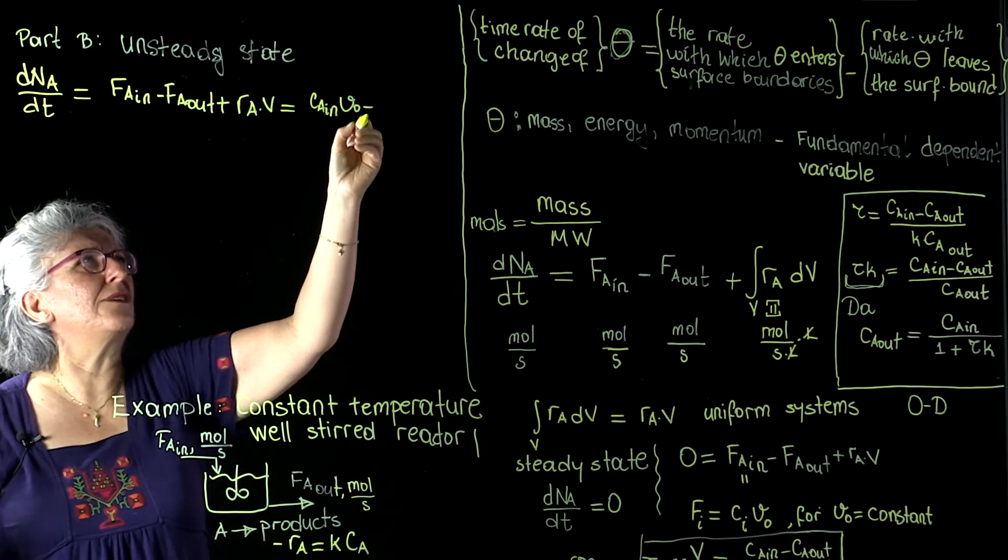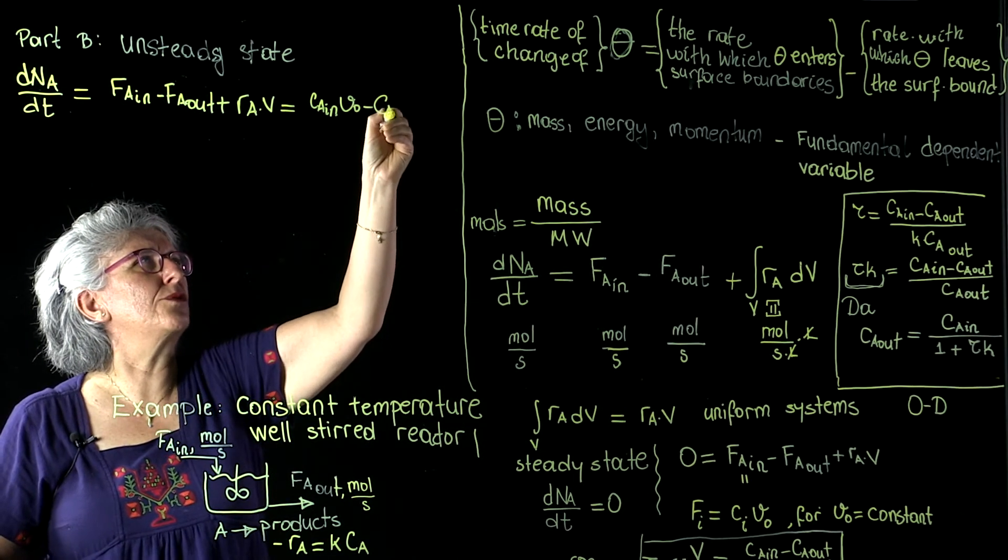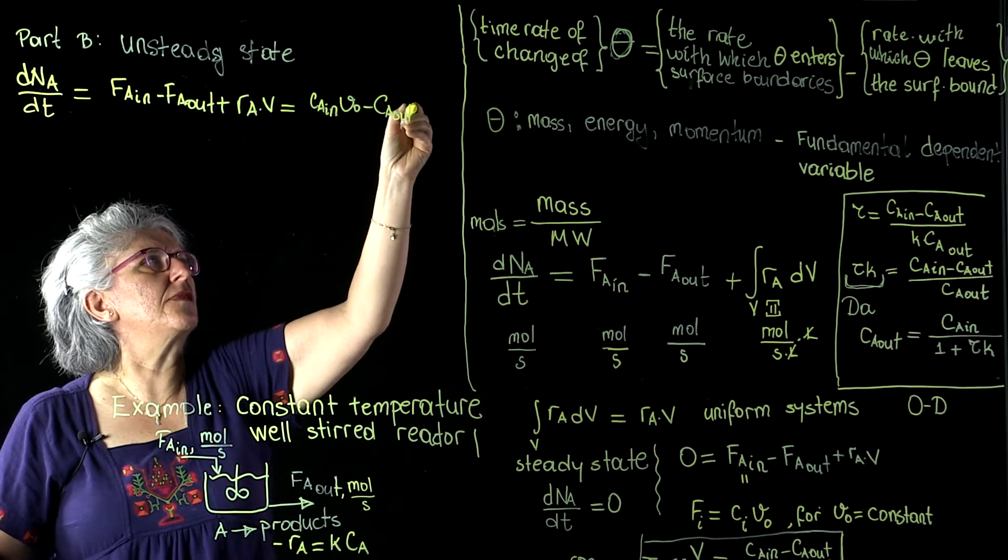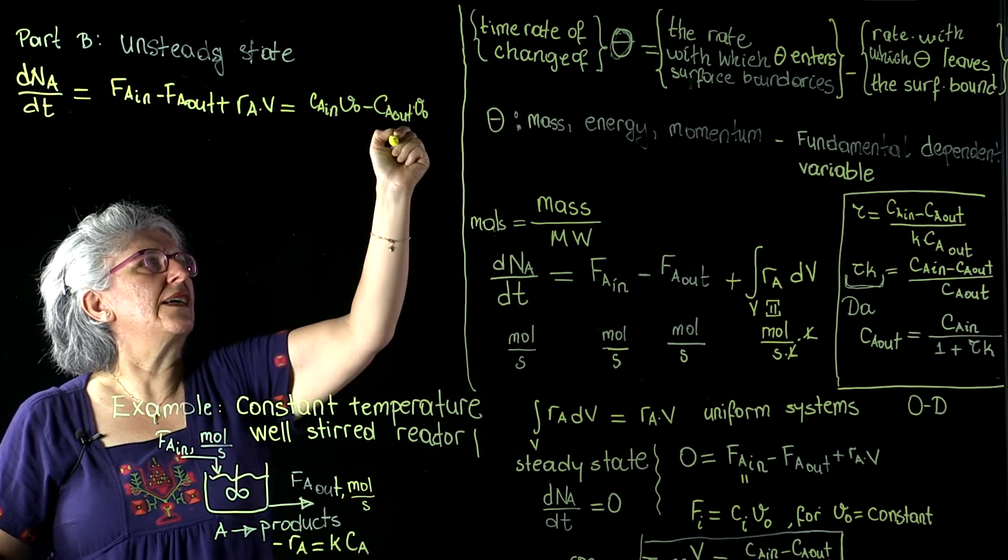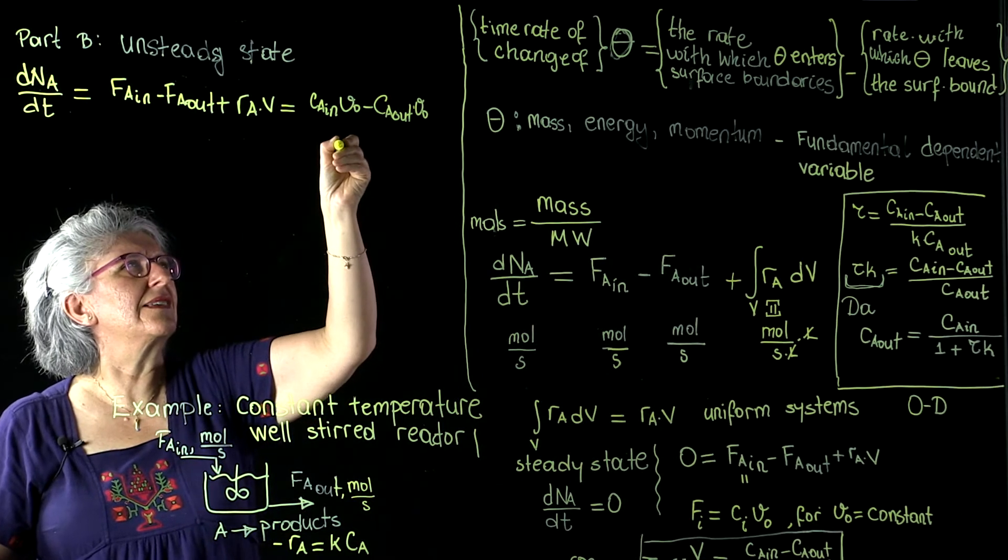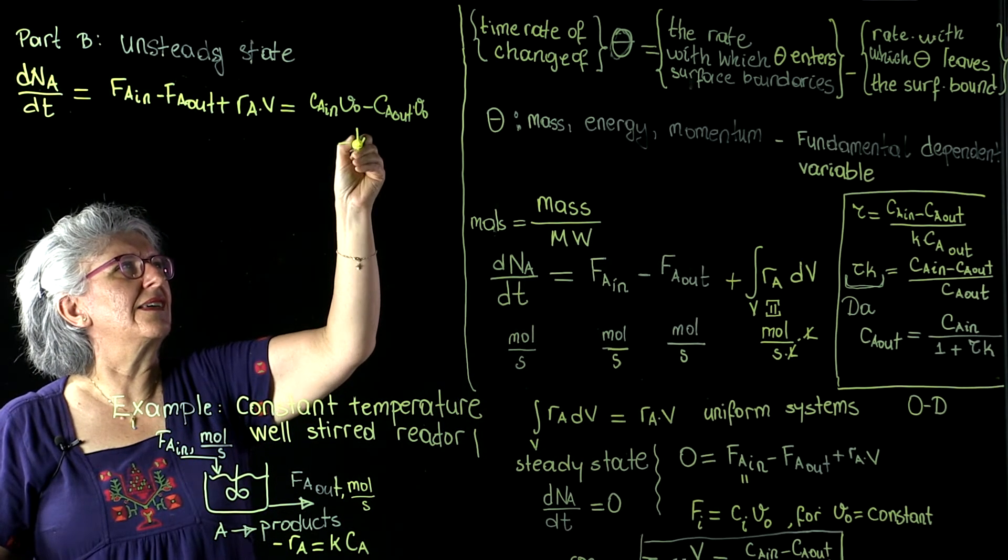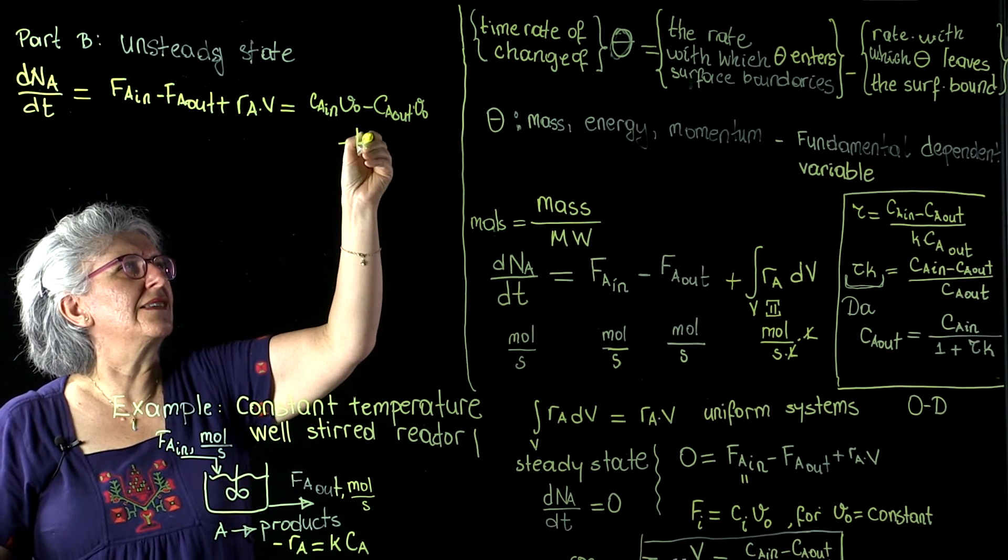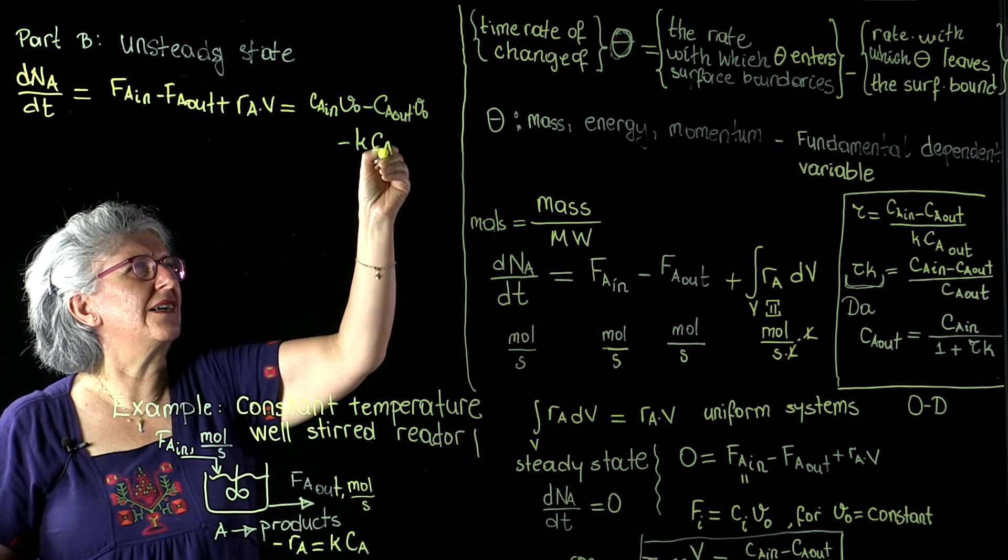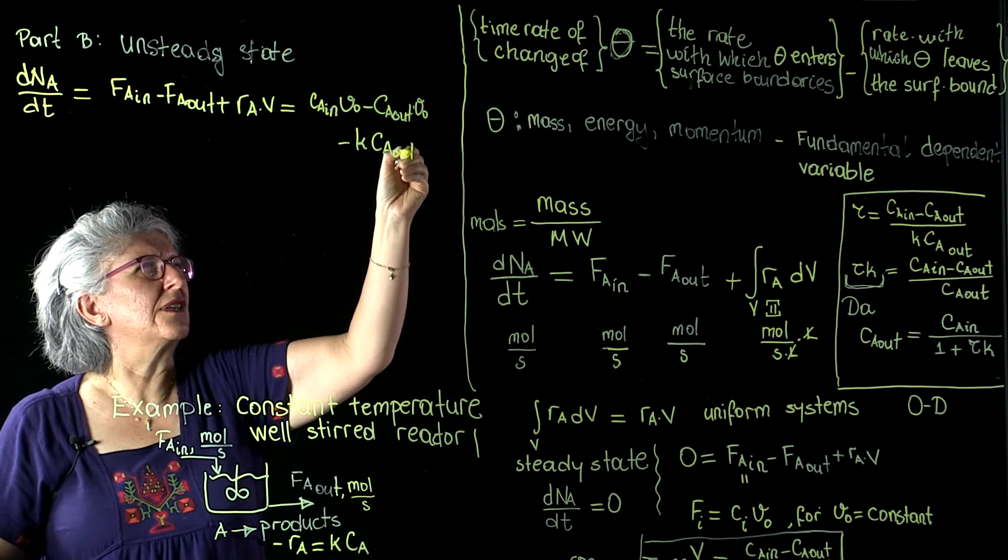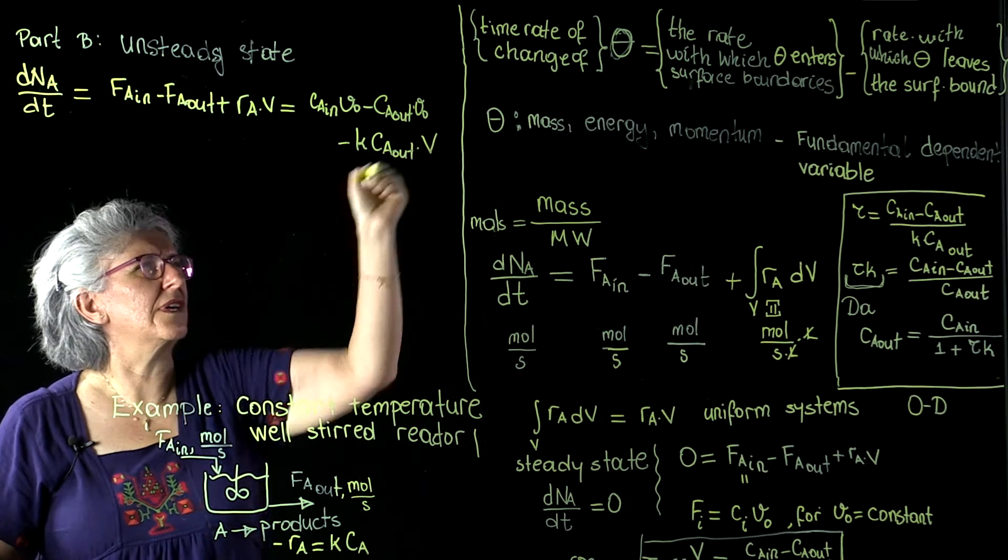FA out is CA out times V0 and RA is K times CA out times the reactor volume.